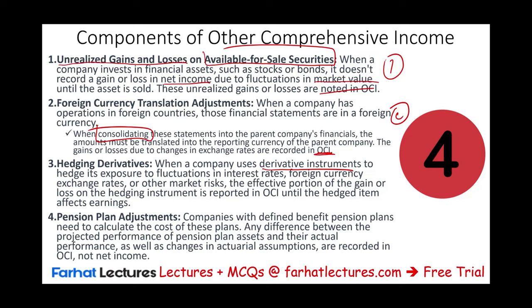When a company has a defined benefit pension plan, they need to calculate the cost of the plan. Any difference between the projected performance of the pension plan assets and the actual performance — which could be a loss or a gain — will be recorded in OCI. Also, actuarial adjustments or actuarial changes that change from year to year are reported initially in OCI as well. All these items are initially recorded in OCI and eventually will make it to the income statement through reclassification, each under a separate scenario.